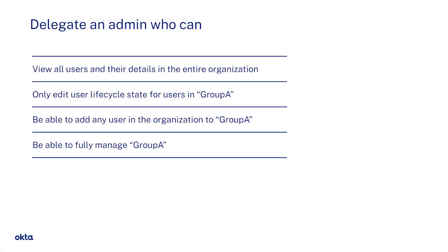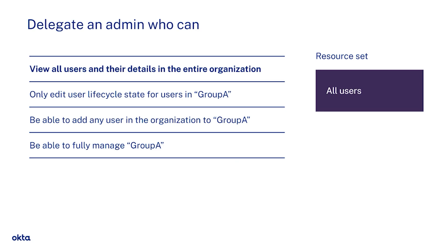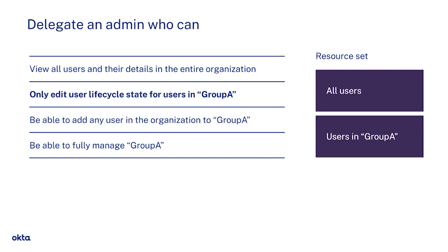Let's take a look at an example where we can leverage these best practices. Say you want to give Peter the following permissions. Starting with the resources first, in order to view all the users and their details in the entire organization, Peter will have to have access to the all users resource. To edit the lifecycle state for users in Group A, Peter will also have to have access to the users in Group A. So now we have two different kinds of user resource constraints on this role.